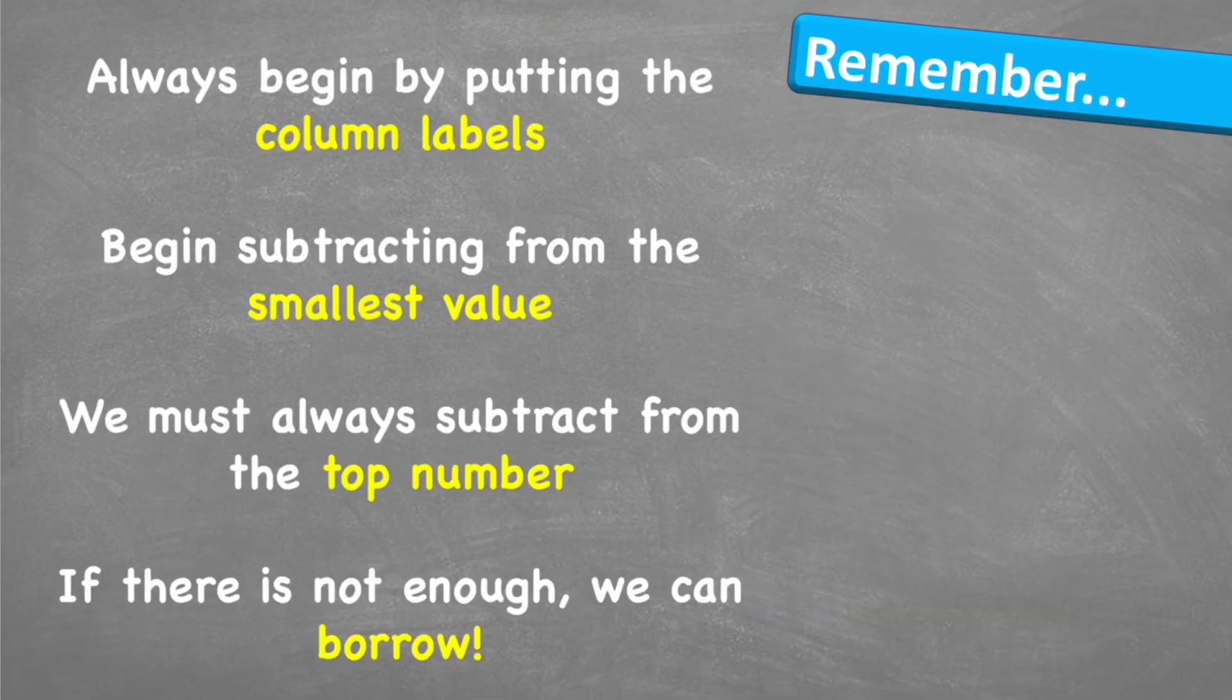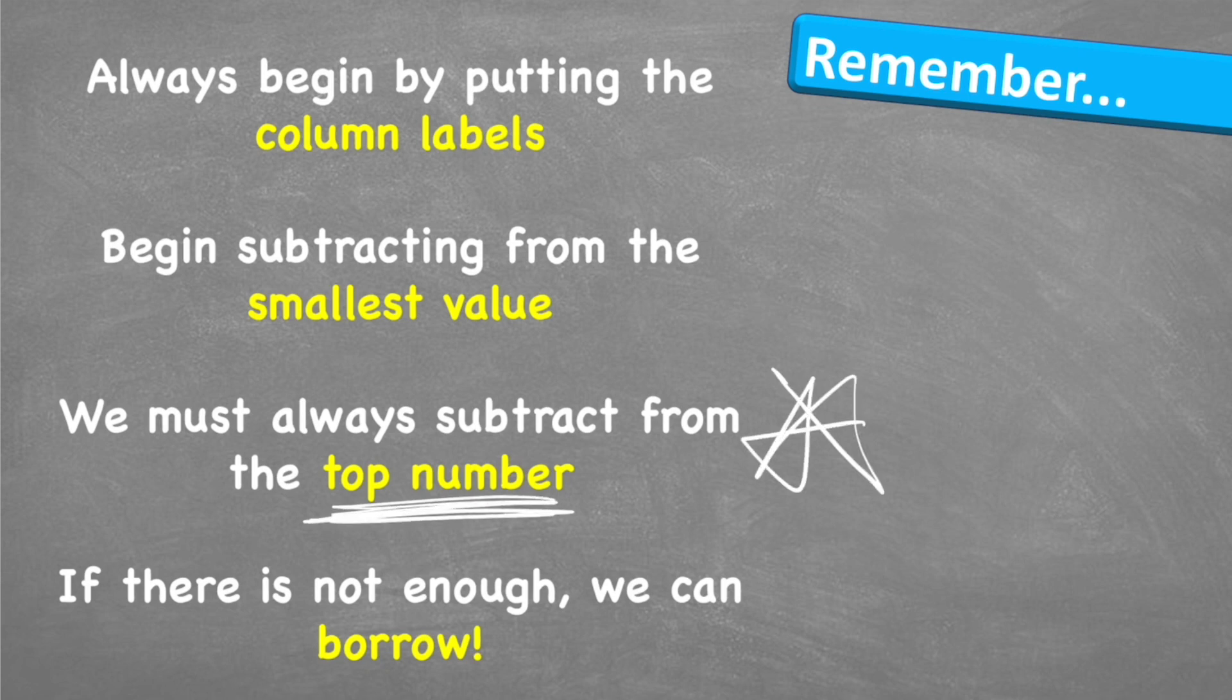Let's look at what to remember. Always begin by putting your column labels. By putting those 1s, 10s, and 100s, you are less likely to make a mistake. Begin subtracting from the smallest value, and we must always subtract from the top number. Remember, that is the most important part of this whole lesson. If there is not enough, we can borrow. And where do we borrow from? Next door.